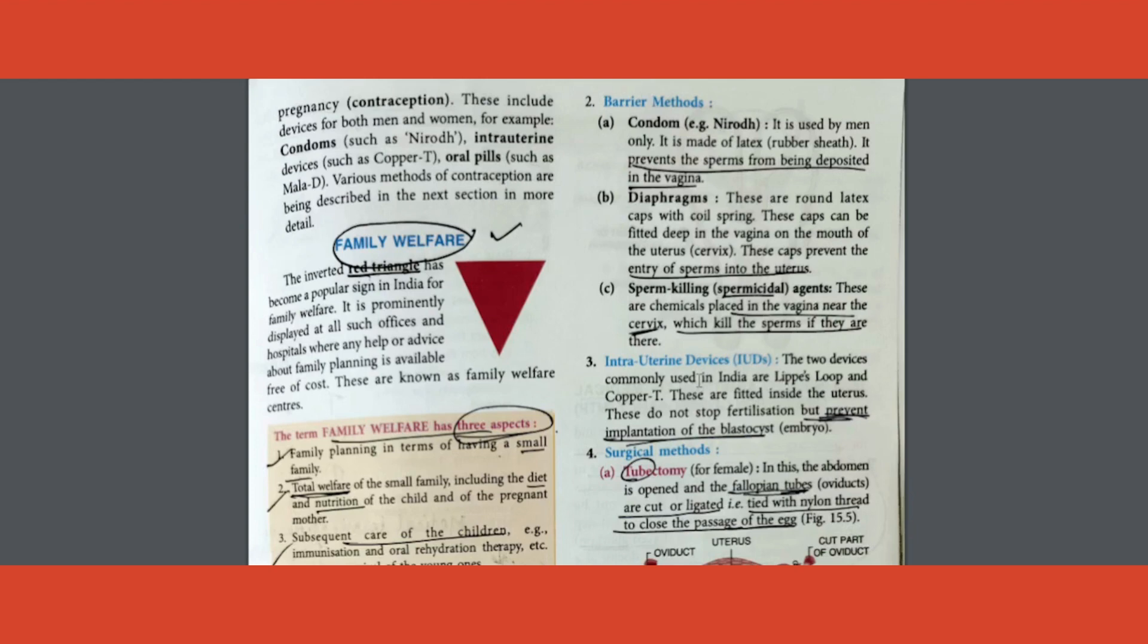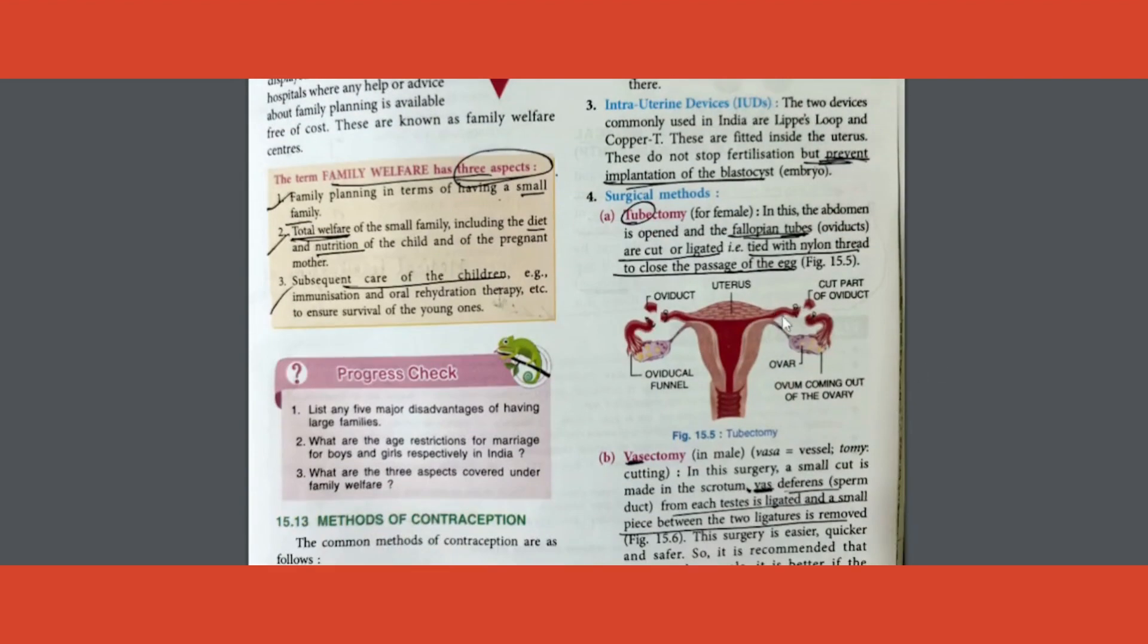You remember what is implantation, I hope. Implantation is the blastocyst which was formed by fusion of egg and sperm. After fertilization, zygote, and after zygote it starts dividing. It forms the blastocyst that coming and fixing onto this part. That is called as the implantation. It is prevented by intra uterine devices. Please mark that as well.